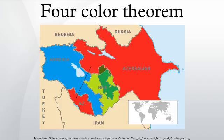A number of false proofs and false counterexamples have appeared since the first statement of the four-color theorem in 1852. The four-color theorem was proven in 1976 by Kenneth Appel and Wolfgang Haken. It was the first major theorem to be proved using a computer. Appel and Haken's approach started by showing that there is a particular set of 1,936 maps, each of which cannot be part of a smallest-sized counterexample to the four-color theorem. Appel and Haken used a special-purpose computer program to confirm that each of these maps had this property. Showing this required hundreds of pages of hand analysis.